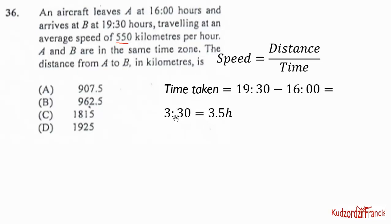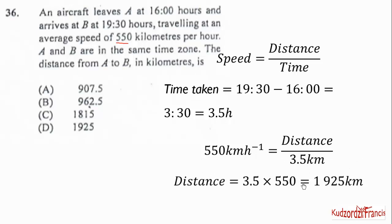So 330 means 3 hours 30 minutes. It will give you 3.5 hours. So we substitute here to get something like this. Now we need to multiply 3.5 by 550. And that will give us 1925 km. Hence, the distance between A and B in kilometers is 1925.